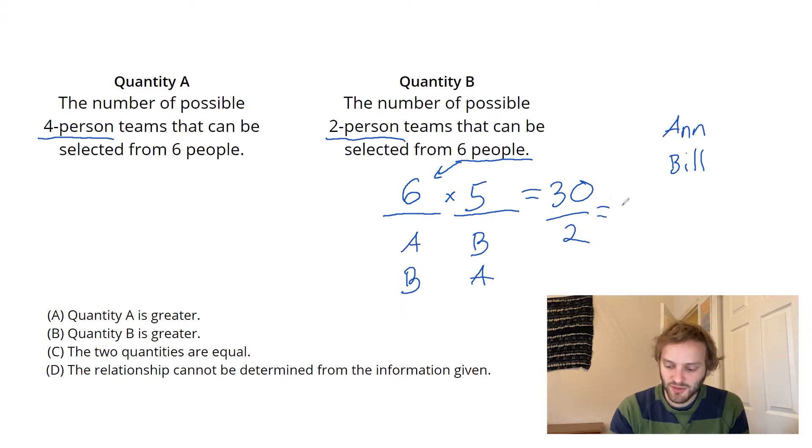To remove those double countings, we divide by two, and we get 15 possible teams. Awesome.